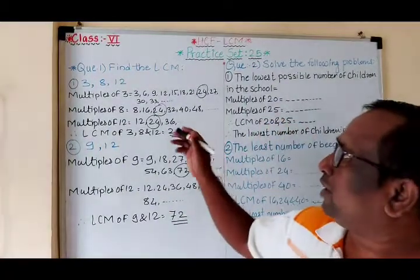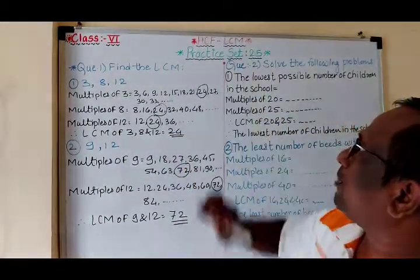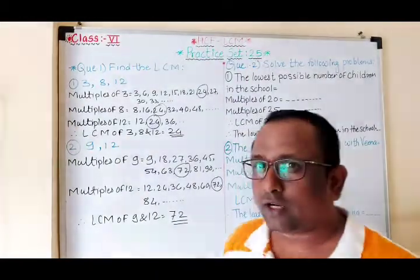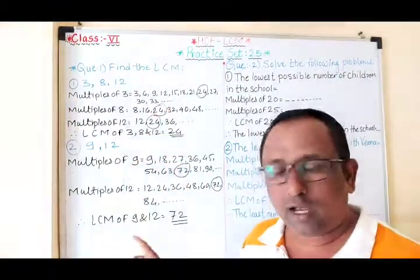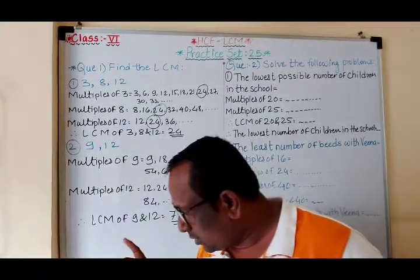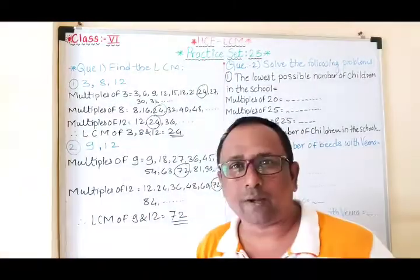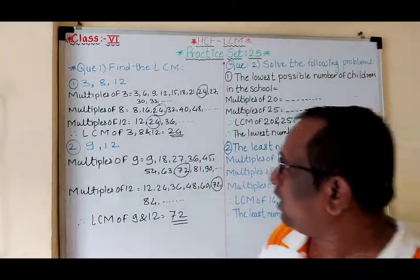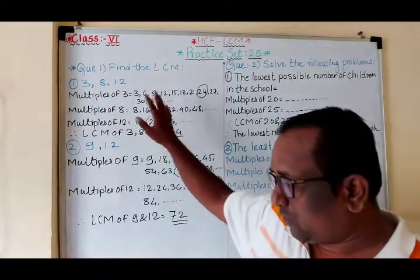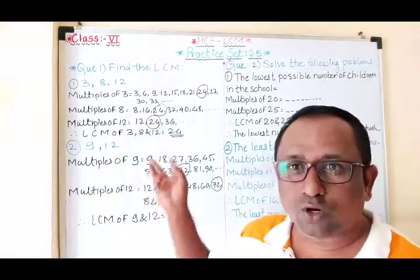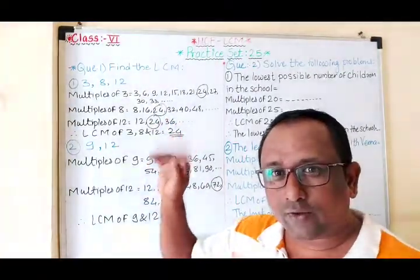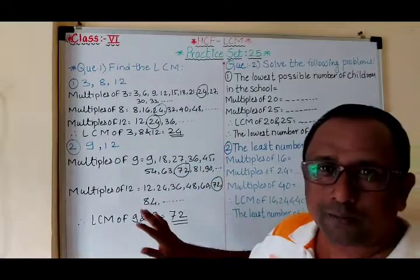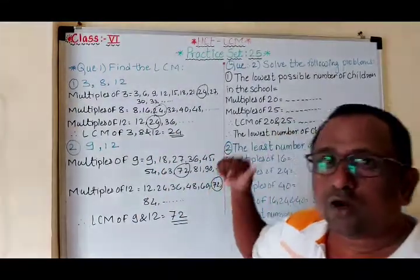So when you are solving Practice Set number 25 in your notebook, students, you have to write these two examples also, and then the given examples. There are five examples given in Practice Set number 25. These two are already solved — you have to just copy — and that file you have to solve. Now we will move to the word problems. There are five word problems.